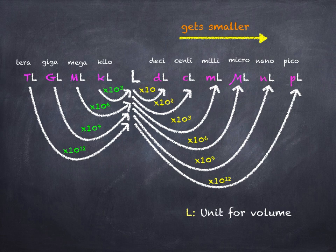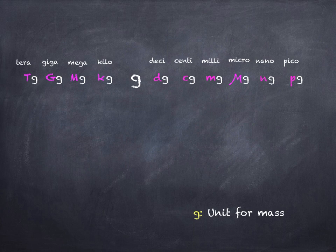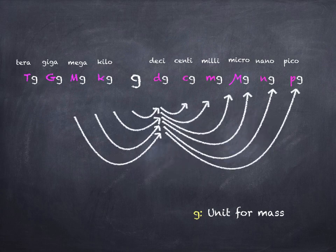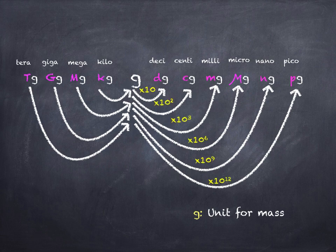The smaller units are on the right-hand side and the larger units are on the left-hand side. This next example is the conversion for mass. The unit for mass is grams, so we have smaller units like decigrams, centigrams, milligrams, micro, nano, and pico, and larger units on the left. It doesn't matter which SI unit you're dealing with — mass, volume, distance — you convert it the same way. For every one larger unit like teragrams, you have 10¹² grams.